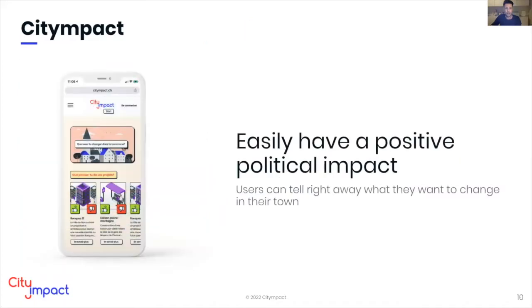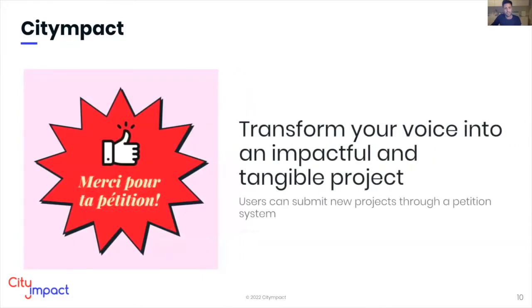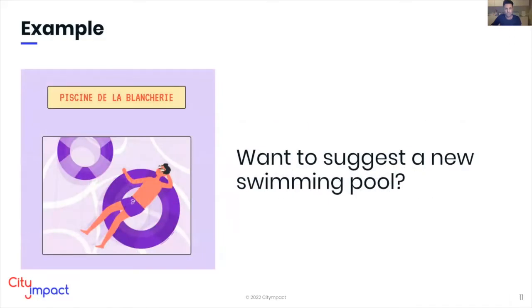Unlike other apps, City Impact starts by focusing on what people really care about and focusing on impact. Users can easily have a positive impact — they can be heard, they can vote, and they can like or dislike current projects. They can transform their voices into an impactful and tangible project. They can submit new projects through a petition, making better use of existing democratic tools in their municipalities. For instance, you could easily suggest creating a new swimming pool in your municipality.